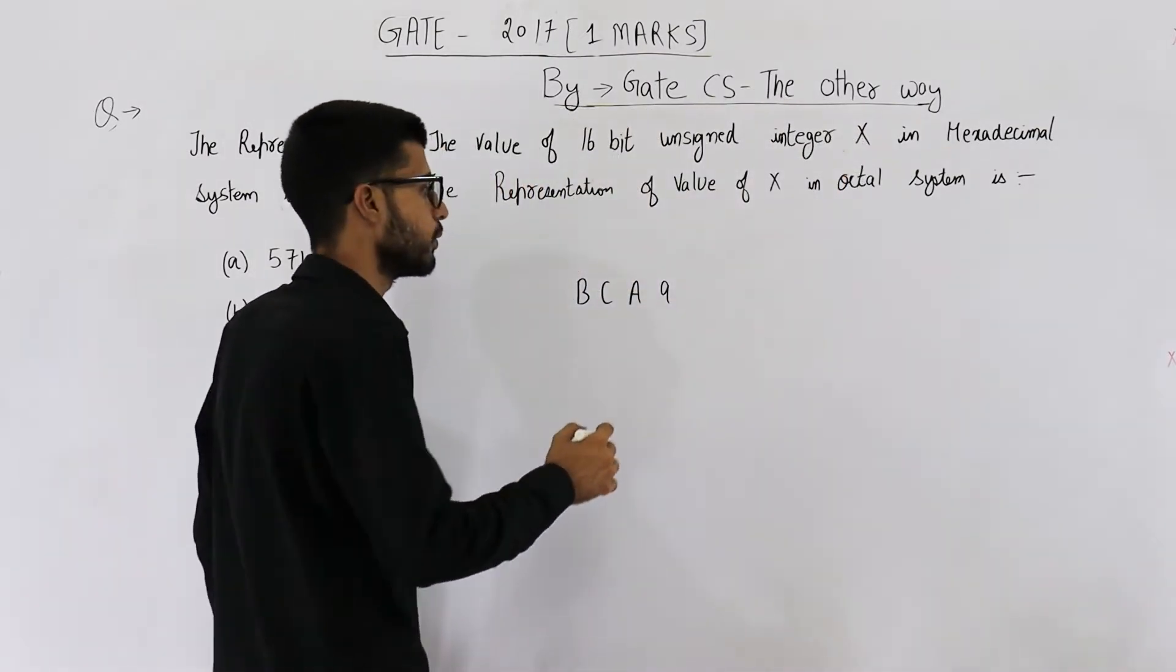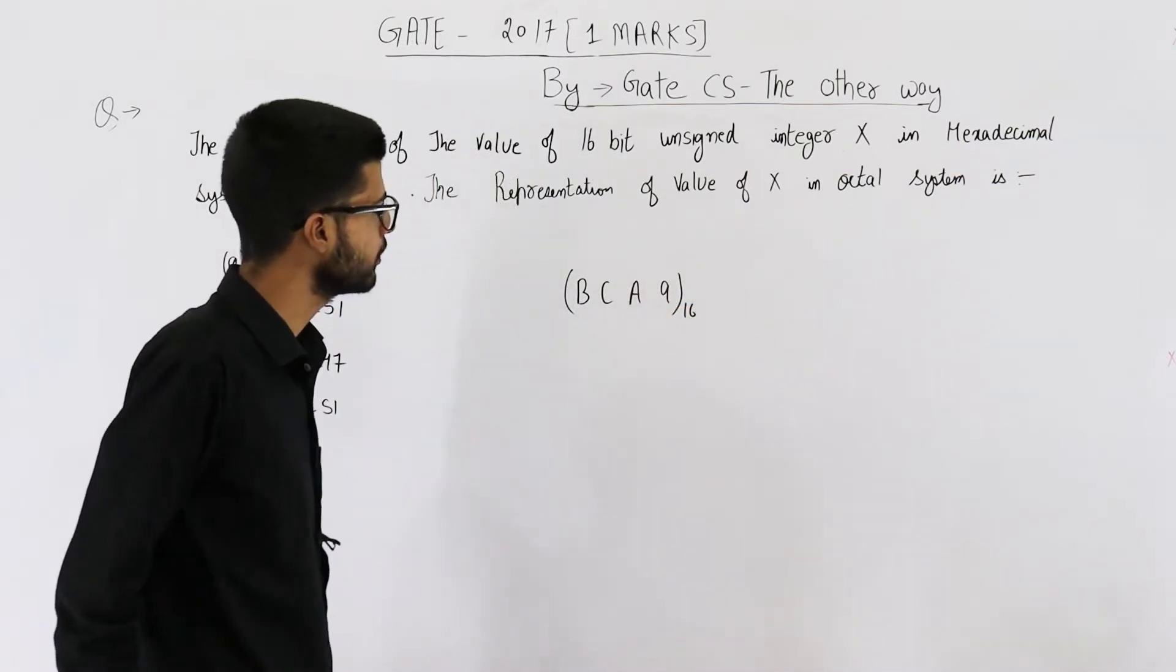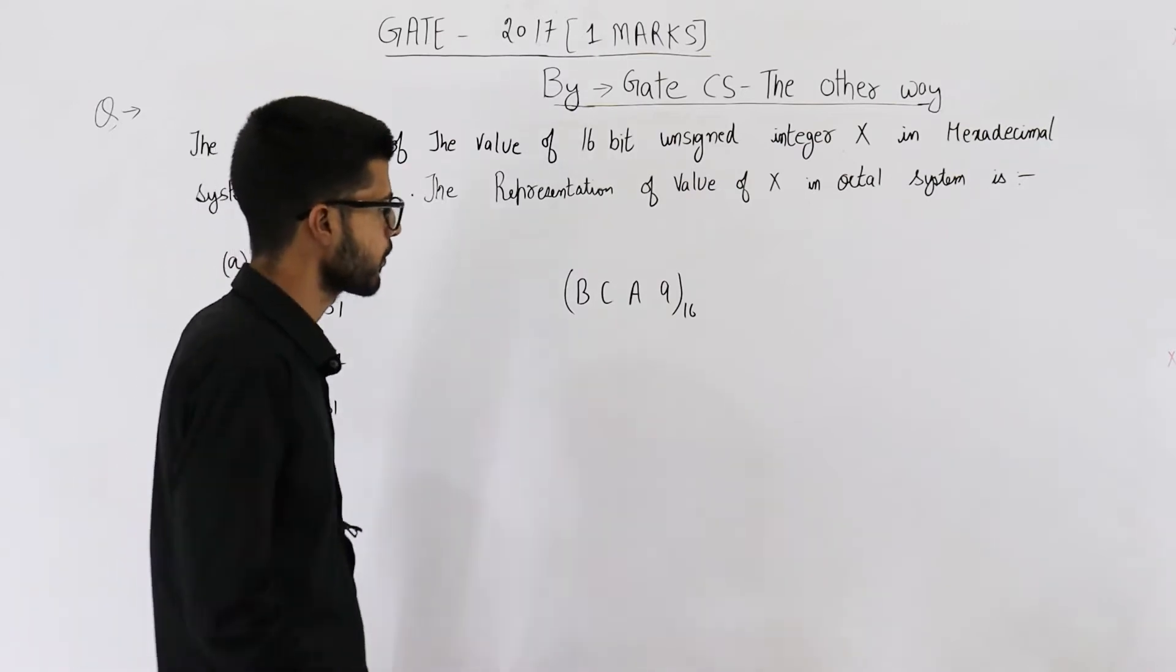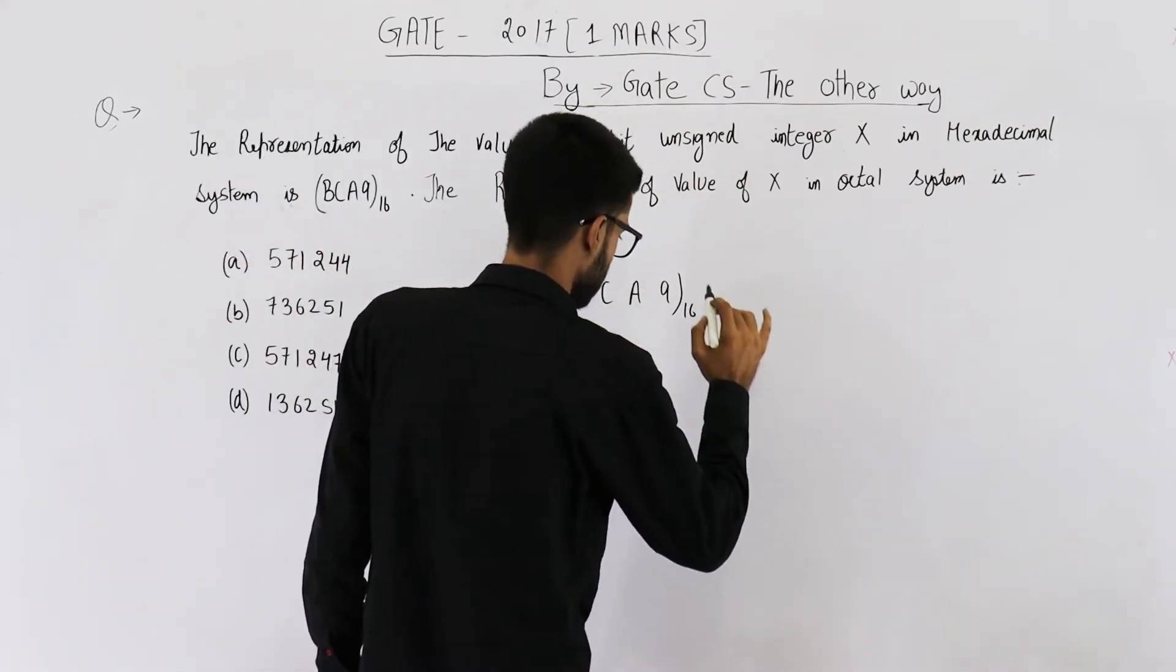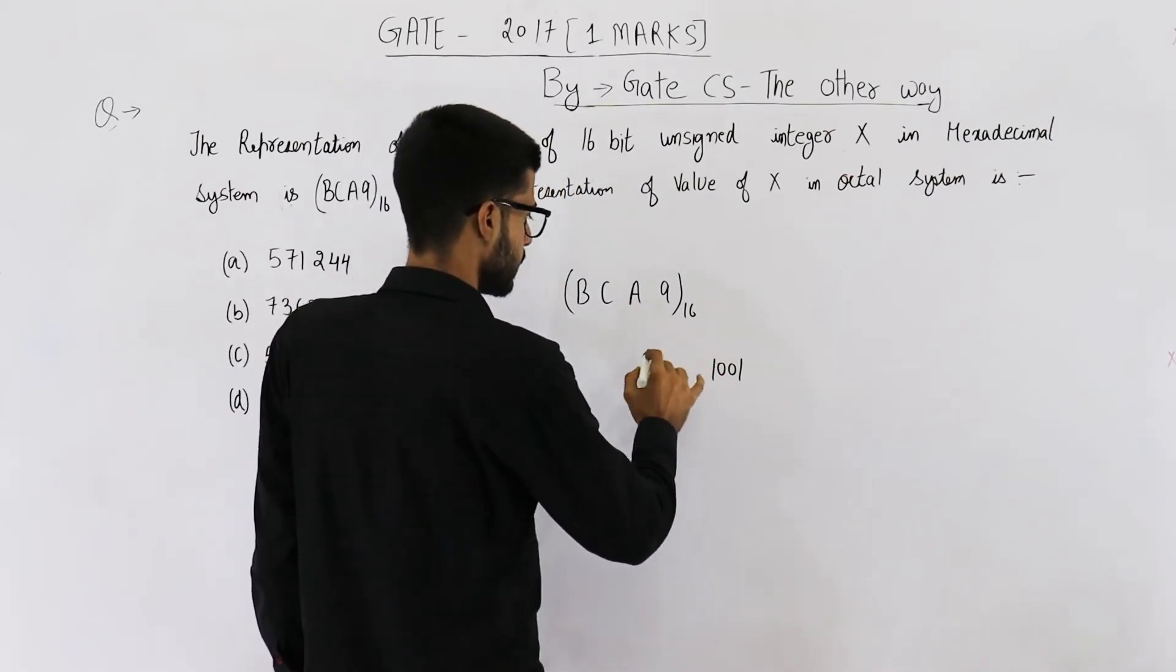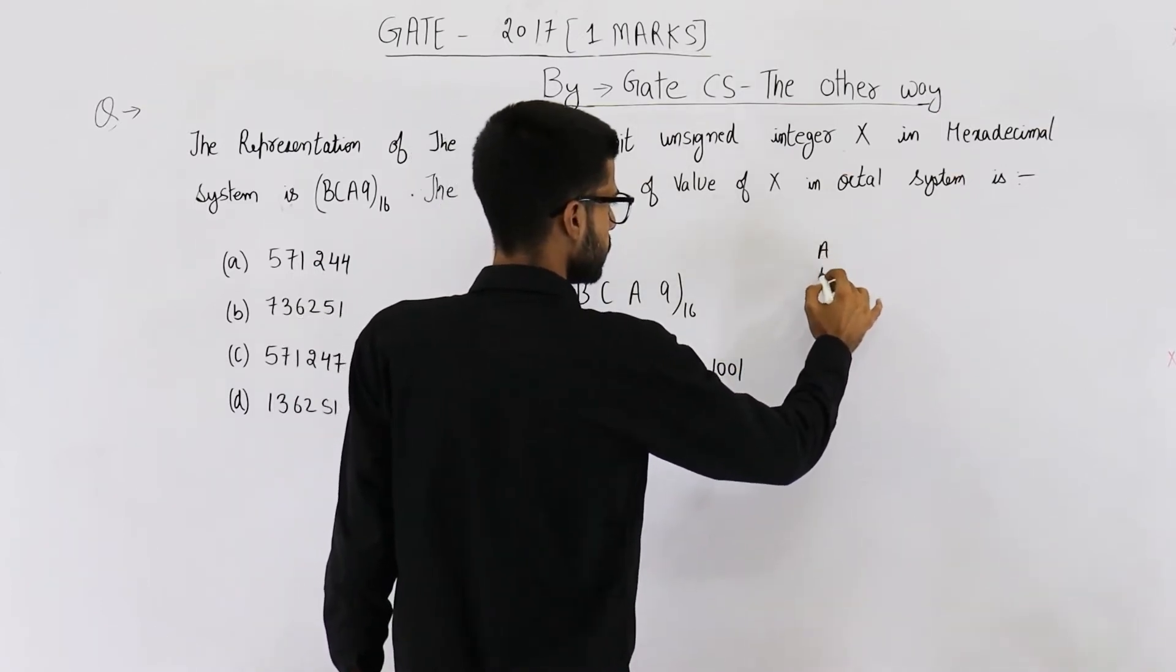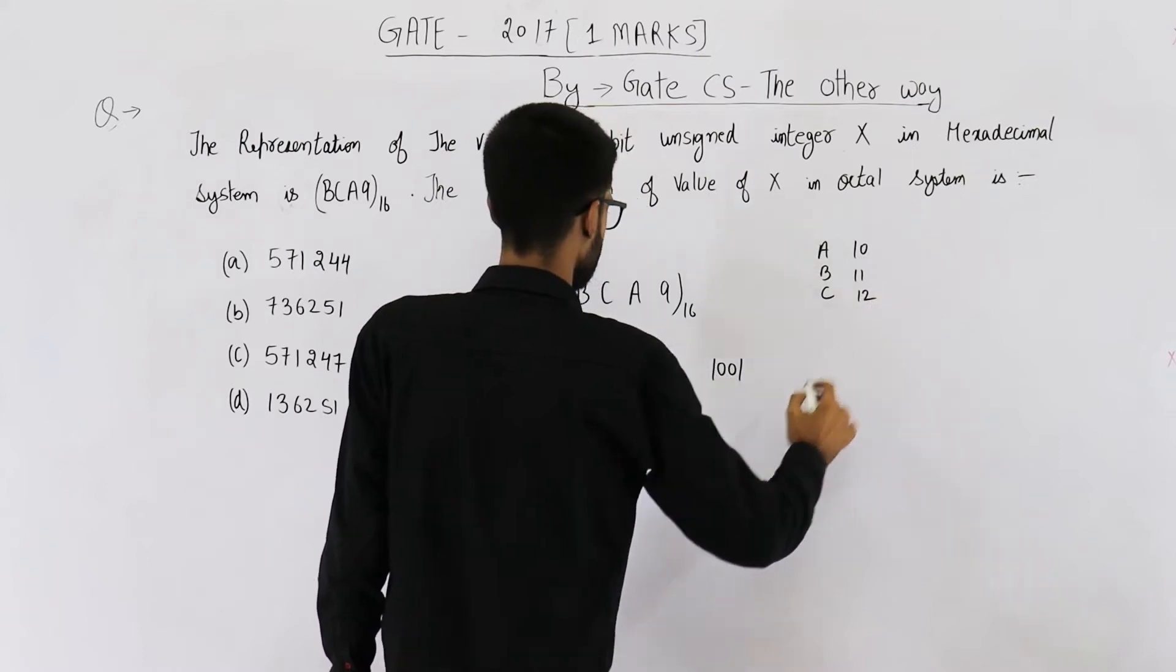You know 16 is 2 raised to the power 4. That means each digit here will require 4 bits. So 9 can be written as 1 0 0 1. A can be written as, a is 10, so it is 1 0 1 0. A B C, this is 10, 11, and 12.